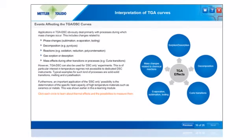The fourth unit describes the events affecting the TGA and DSC curves and how to measure them.